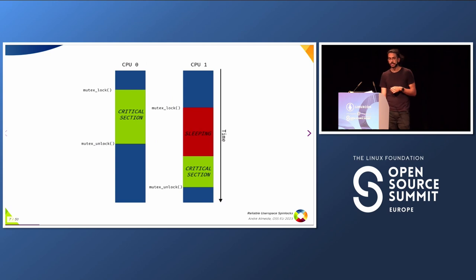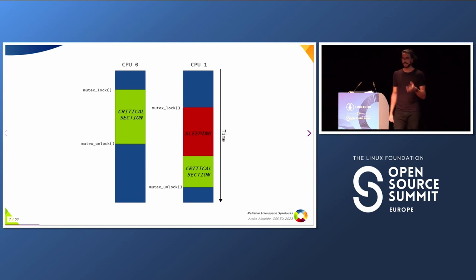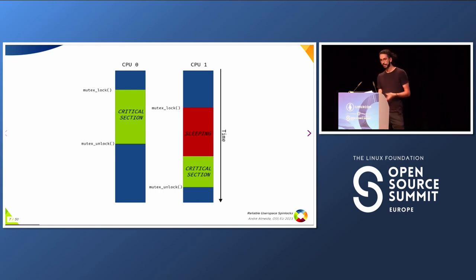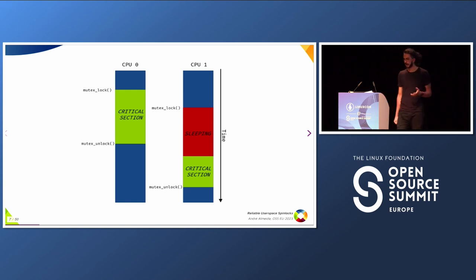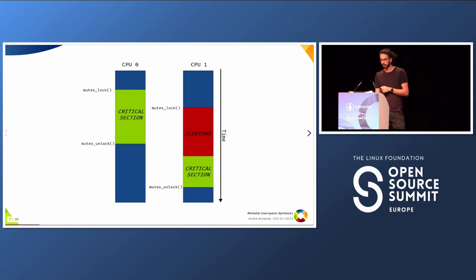Let's say we have two CPUs. CPU 0 gets the lock and does the work on the critical section. CPU 1 does a context switch, goes to sleep, waiting for the lock to be free. Then it can finally take the lock, work on the critical section, and free the lock.